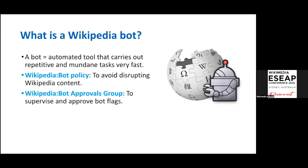The first thing we need to know is what a bot is. Just like in real life we invent robots to help us with some tasks, in Wikipedia a bot is a tool that helps us carry out some repetitive and very boring tasks, like adding a category or fixing a grammar correction.